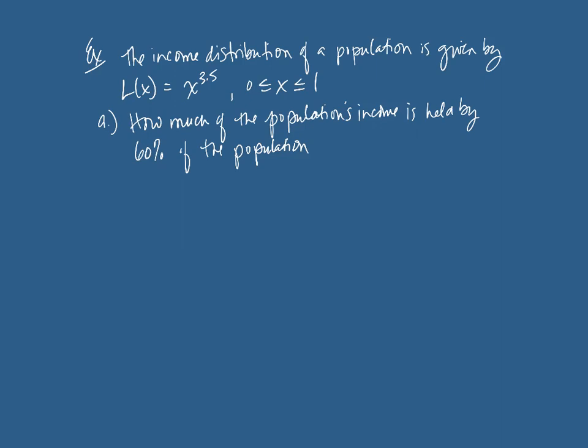So L of 0.6 is 0.6 raised to the 3.5 power. So this one, we're going to have to pull a calculator for. And when we do that, we get 0.6 raised to the 3.5, which is 0.167313. And so that means when we multiply by 100, this is 16.73% of the wealth. So 60% of the population only holds 16.73% of the income. Wow. That's not very much held by 60%.